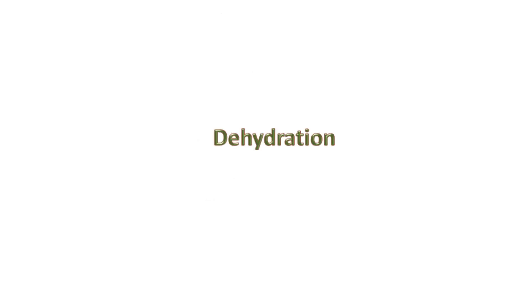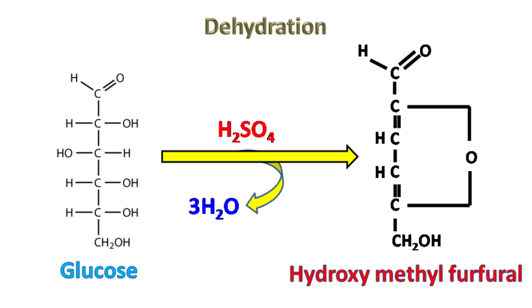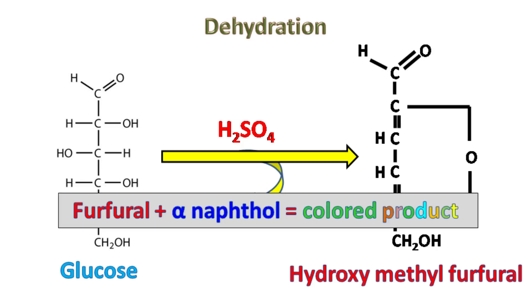Dehydration. Monosaccharides, when treated with concentrated sulfuric acid, undergo dehydration by releasing three molecules of water. The products formed during dehydration are called furfurals. The furfurals so formed are chemically active and can react with phenolic compounds like alpha-naphthol to give colored products.